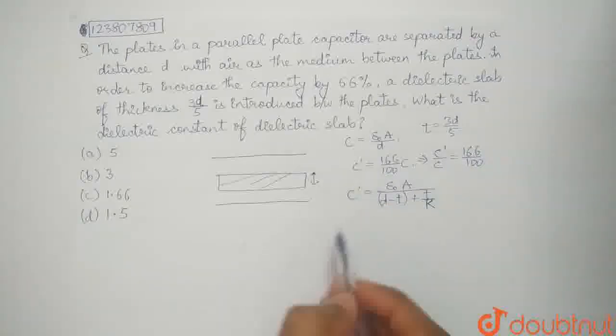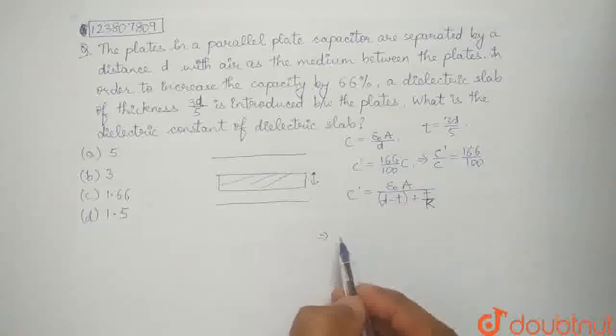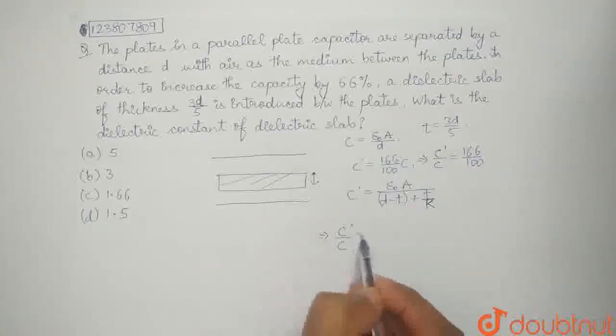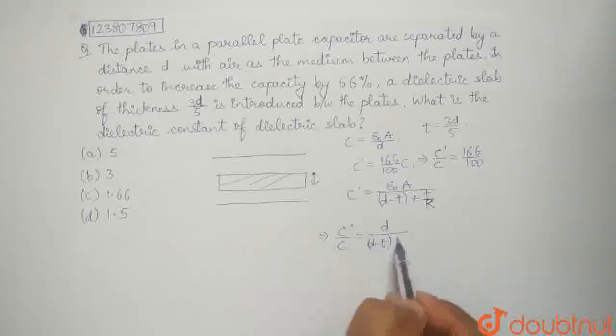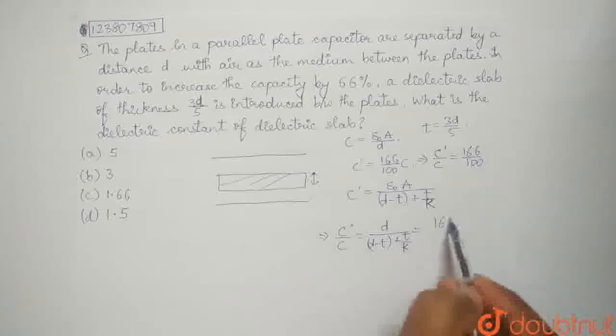Here we have to say that c dash by c will be equal to d by d minus t plus t by k. Now we have to equate them: 166 by 100.